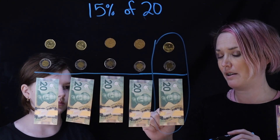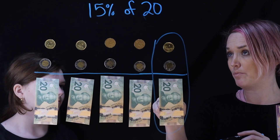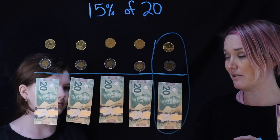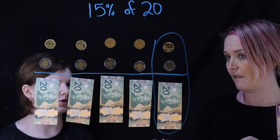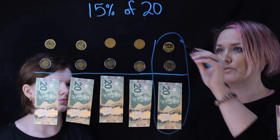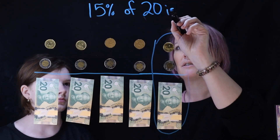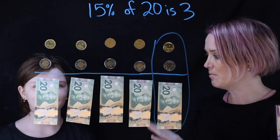But if someone says they're going to give me 15% of 20, how much money are they going to give you? They're going to give you $3, right here. So 15% of 20 is 3. That was awesome, Lauren.